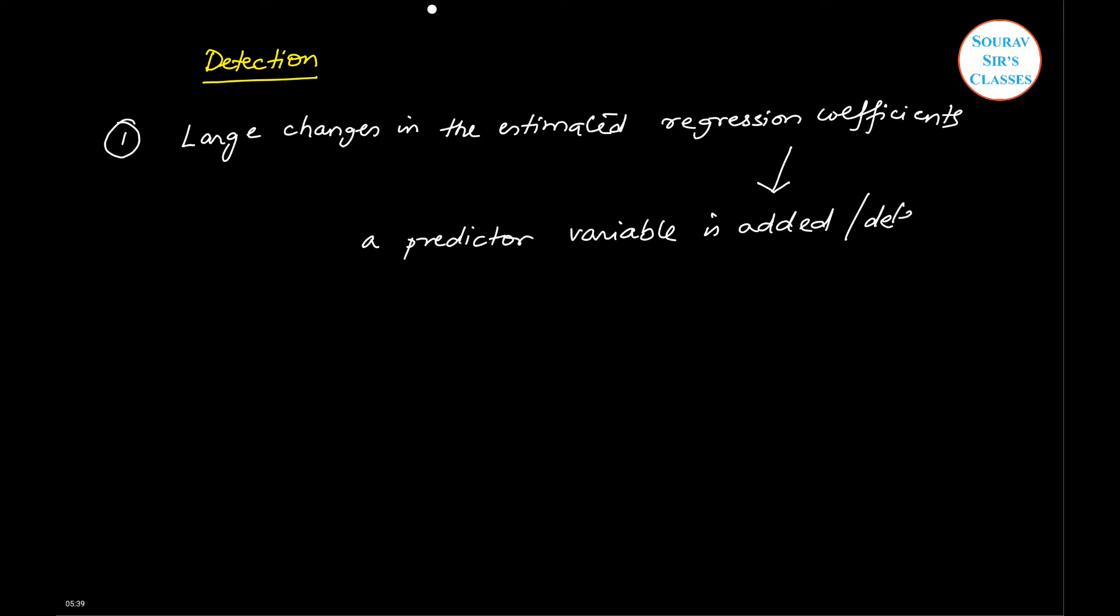There are many ways. Let us look at some. The first is large changes in the estimated regression coefficient will take place. This will happen when a predictor variable is added or deleted. So when this happens, then you can be skeptical, doubtful, about presence of multicollinearity. This is one of the signals.